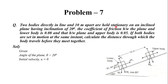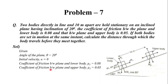Initially they are resting, so initially U will be 0. Coefficient of friction between lower body and plane, mu1, is 0.08. Coefficient of friction between plane and upper body, mu2, is 0.05. The distance between two bodies is 10 meters.